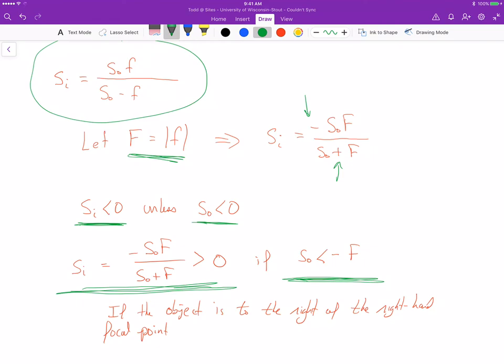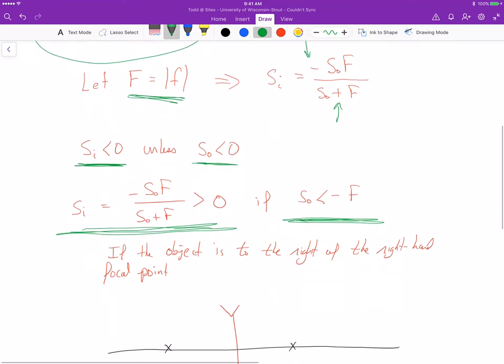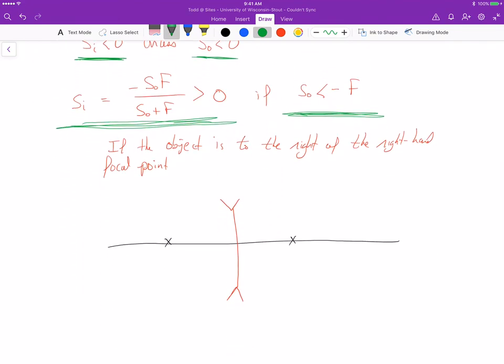How exactly can we have a negative object distance? Well, it means that in this situation here, our object has to be over on the right side of the lens. Now that is not possible for a physical object, because we always are assuming that light is traveling from left to right.